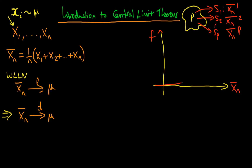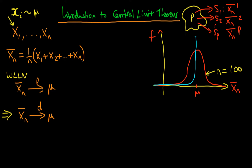For a moderately sized sample, our frequency distribution might look something like that. We know that because the sample mean is an unbiased estimator of the population mean, the frequency distribution is going to be centred around the population mean μ. This might represent the frequency distribution for n = 100. As I increase the size of the sample, the distribution becomes more sharply concentrated around μ — it becomes narrower. The blue line I've drawn here might represent a sample size of 10,000, where each sample from the population is composed of 10,000 individuals.